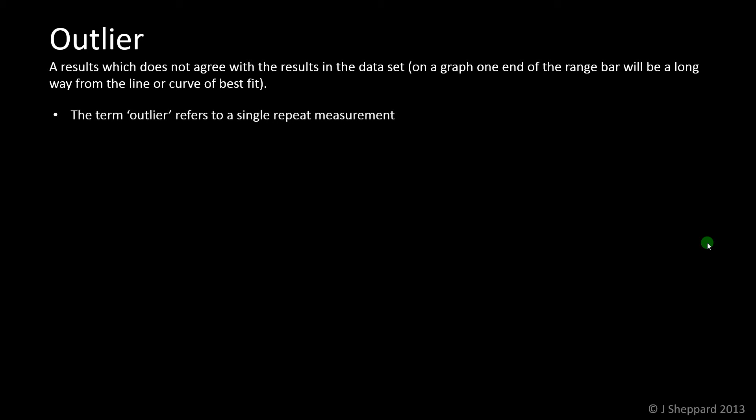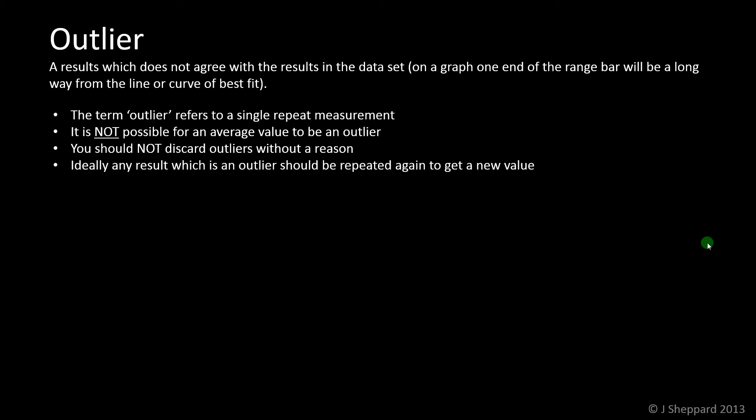Some important points to note. The word outlier has to refer to a single repeat measurement. It can never refer to an average value. You shouldn't get rid of them without a reason. If you do discard one, you have to have a very good reason for doing it. Ideally, any result which is an outlier should be repeated again to get a new value. That way you have justification for discarding it, but you should also try to come up with a reason why it went wrong. Please don't feel like you have to identify some outliers. If you've done your experiment very well, it's entirely possible you won't have any.